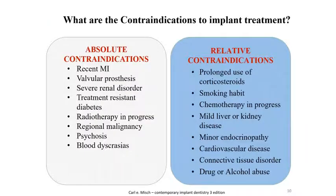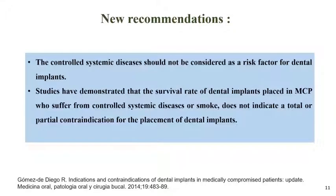Coming to the contraindications of implants, there are absolute and relative contraindications. Absolute contraindications include recent myocardial infarction, severe renal disorder, or radiotherapy in progress. Relative contraindications include prolonged use of corticosteroids, chemotherapy in progress, cardiovascular disease, or alcohol or drug abuse. According to new recommendations, controlled systemic disease should not be considered a risk factor for dental implants, and studies show that survival rates in medically compromised patients with controlled systemic disease or smoking do not indicate a total or partial contraindication.